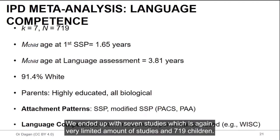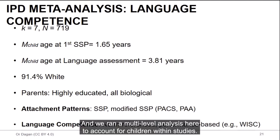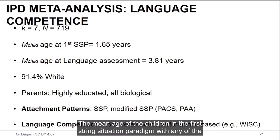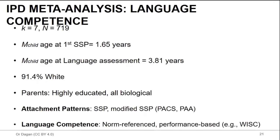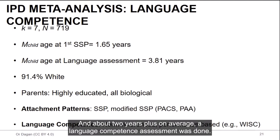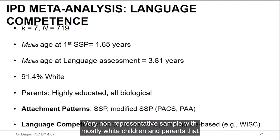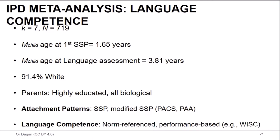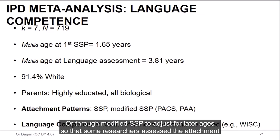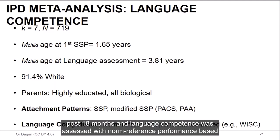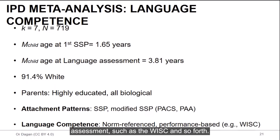We ended up with seven studies, which is again, very limited amount of studies and 719 children. And we ran a multi-level analysis here to account for children within studies. The mean age of the children in the first strange situation paradigm with any of the parents was about one year and a half, and about two years plus, on average, a language competence assessment was done. Very non-representative sample with mostly white children and parents that are highly educated and all biological. Attachment patterns were assessed either through the strange situation paradigm or through a modified SSP to adjust for later ages, so that some researchers assessed attachment post 18 months, and language competence was assessed with norm-referenced performance-based assessments, such as the WISC and the WPPSI and so forth.